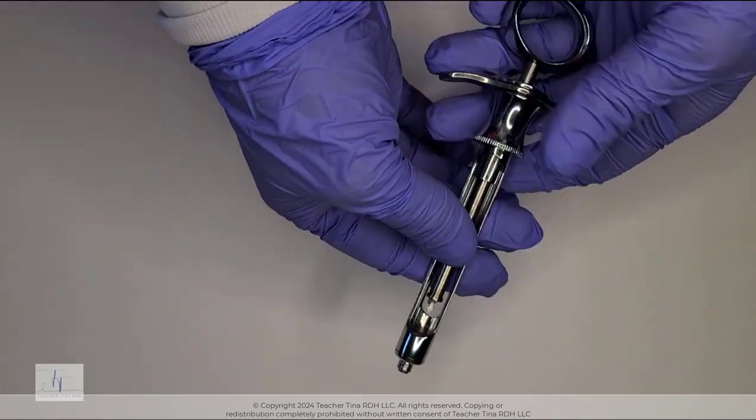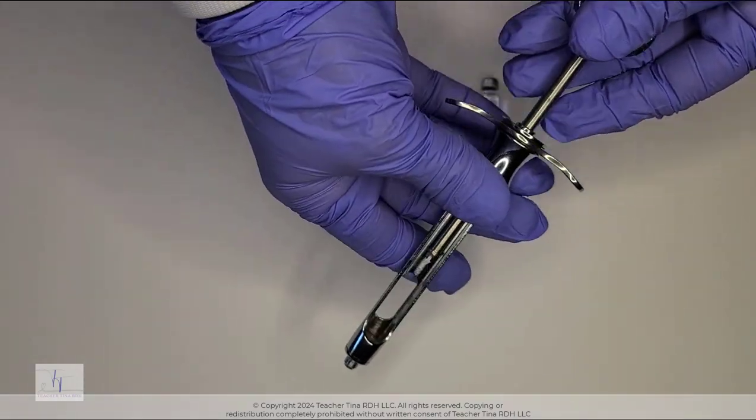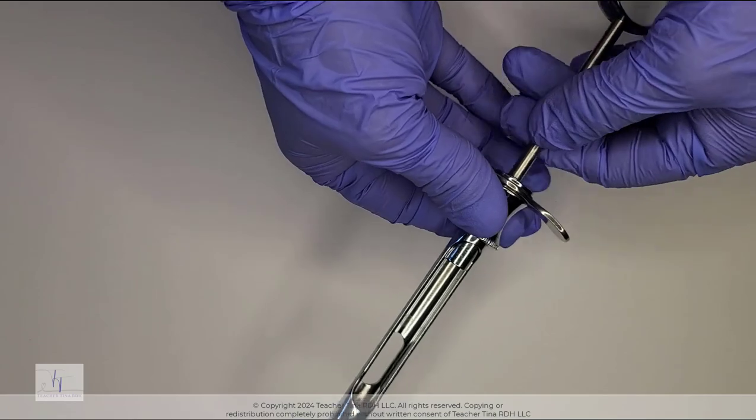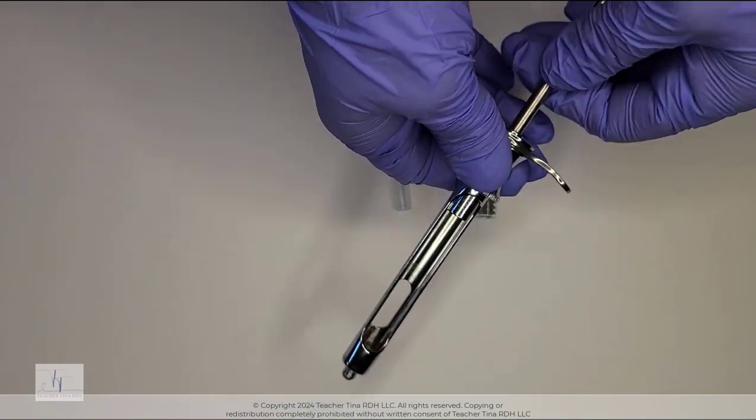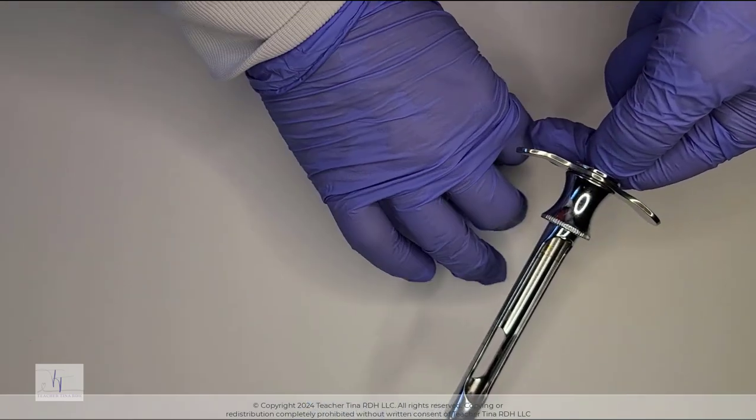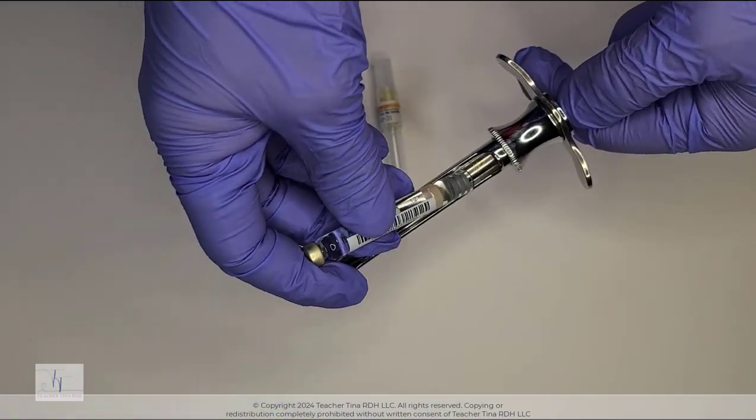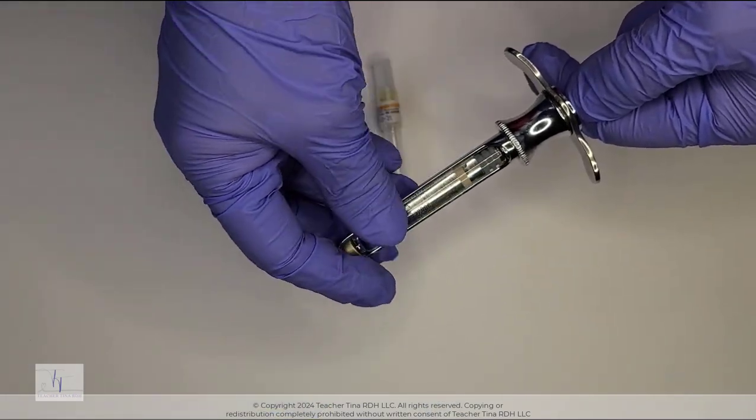Putting the syringe together should be done with gloved hands. Pull back on the piston to open up the very large window, pulling back so that there is no obstacle. Place rubber stopper side towards the thumb ring, metal cap side towards the needle adapter, and allow the piston to relax and hold the cartridge.